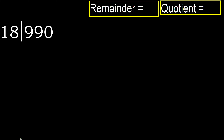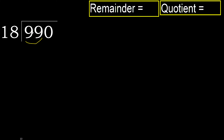990 divided by 18. 9 is less than 18, therefore move to the next digit. 99 is not less, therefore we work with 99.